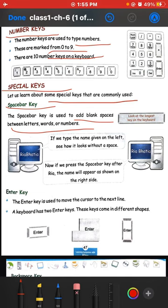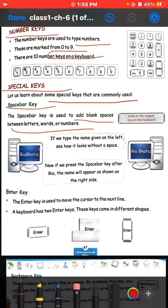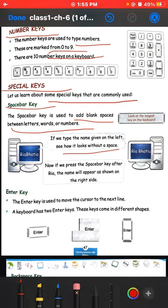You can see on the keyboard there is a longest key of a keyboard known as a space bar key. This is the longest key. So if we type the name given on the left, see how it looks without a space. These two computer screens are given to you.